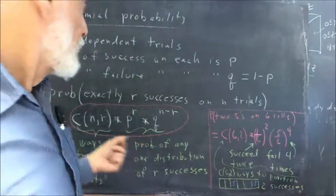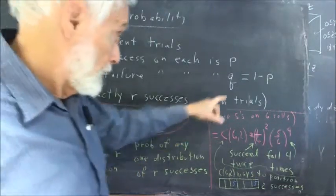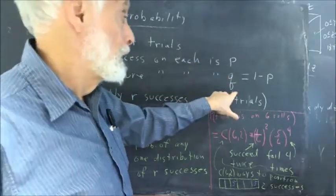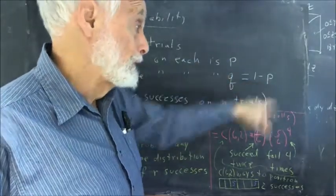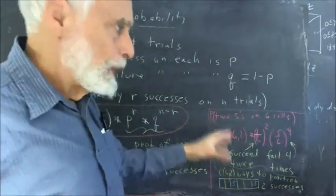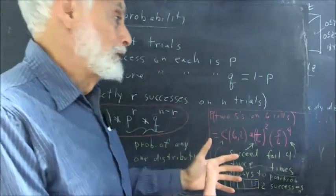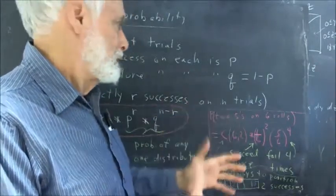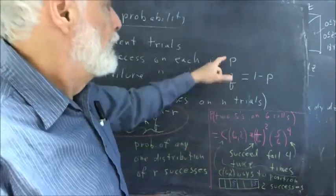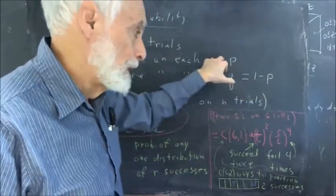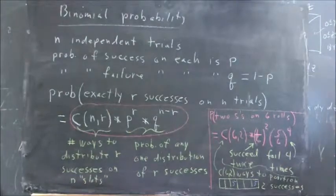In any case, if the probability of a success is P, then the probability of failure has to be one minus P. Probabilities always add up to one. The probability is one that something is going to happen. And if what happens is either this or this, then the probability of this has to be one minus the probability of that.